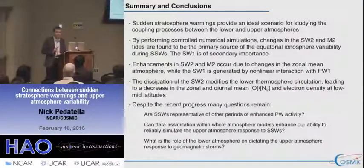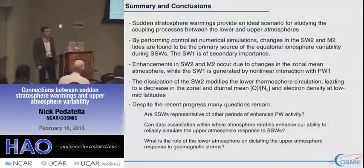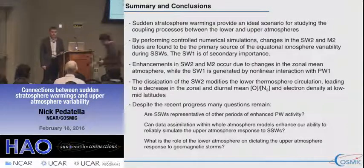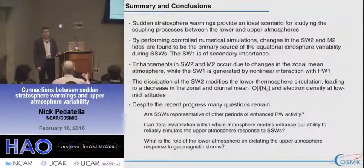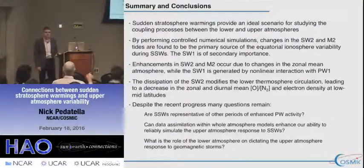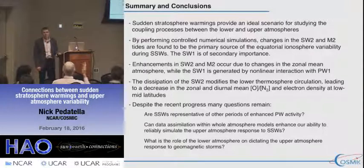With that, I will conclude and happy to take any questions. Questions for Nick? In the test where you turned off the tides but retained the zonal mean circulation associated with the stratospheric warming that was actually produced by the tides, you got a similar type of effect, but the amplitude appeared to be maybe half. What might account for the remainder?